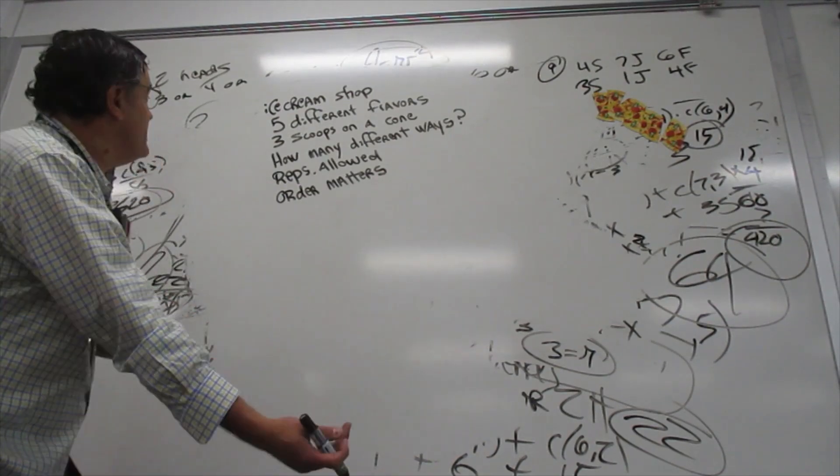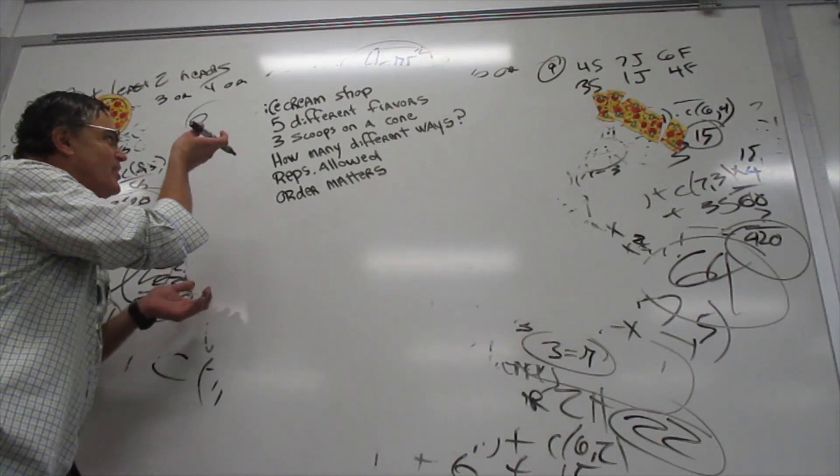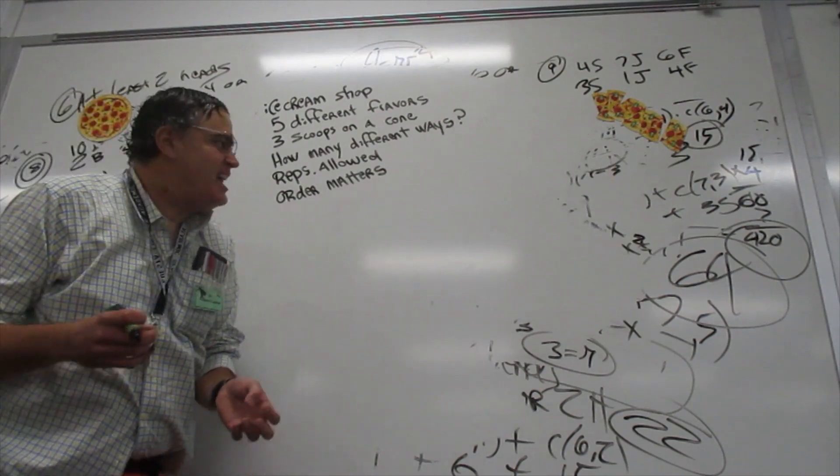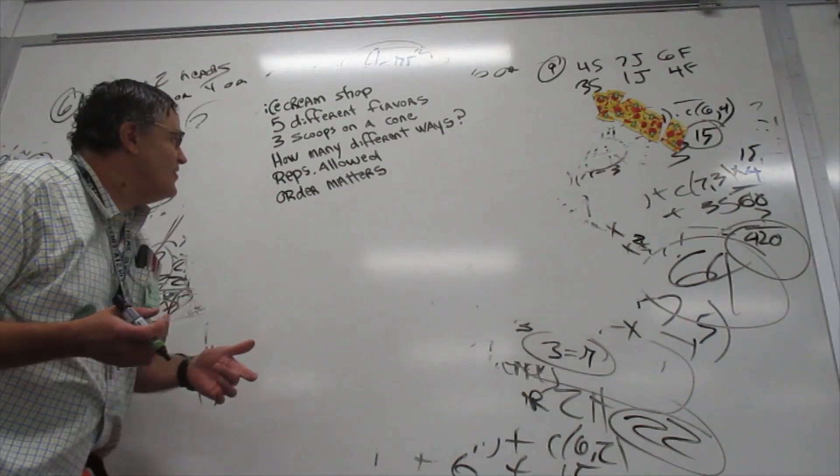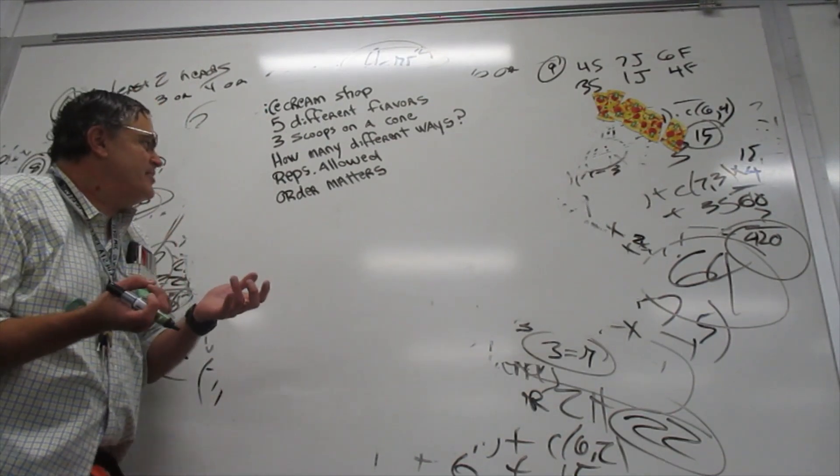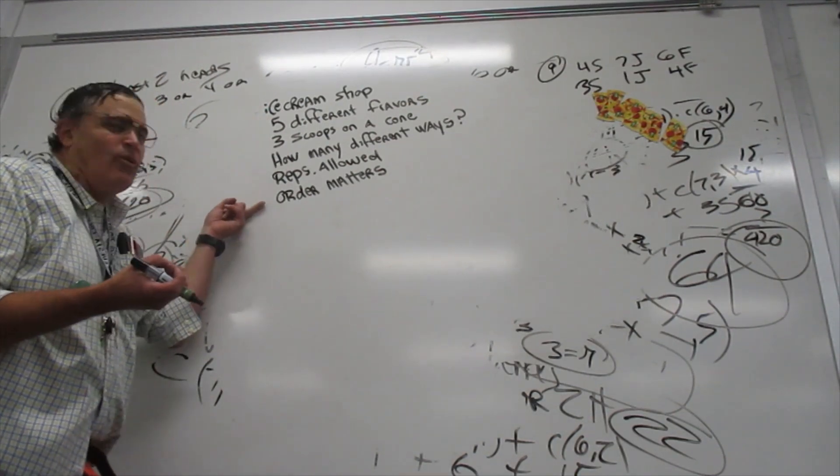We've got this ice cream problem here, where you go to an ice cream shop and they have five different flavors and you want to get three scoops on a cone.